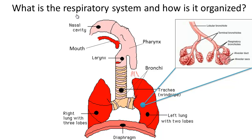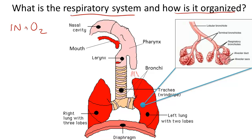What is the respiratory system and how is it organized? The respiratory system is responsible for breathing. Respiration means taking in oxygen to your cells through the lungs and breathing out carbon dioxide.